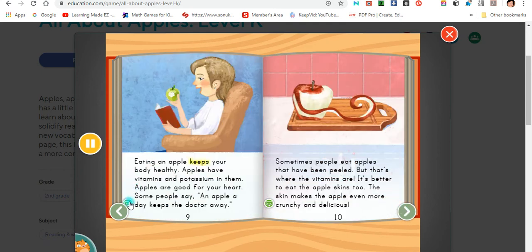Eating an apple keeps your body healthy. Apples have vitamins and potassium in them. Apples are good for your heart. Some people say, an apple a day keeps the doctor away. Sometimes people eat apples that have been peeled, but that's where the vitamins are. It's better to eat the apple skins, too. The skin makes the apple even more crunchy and delicious.